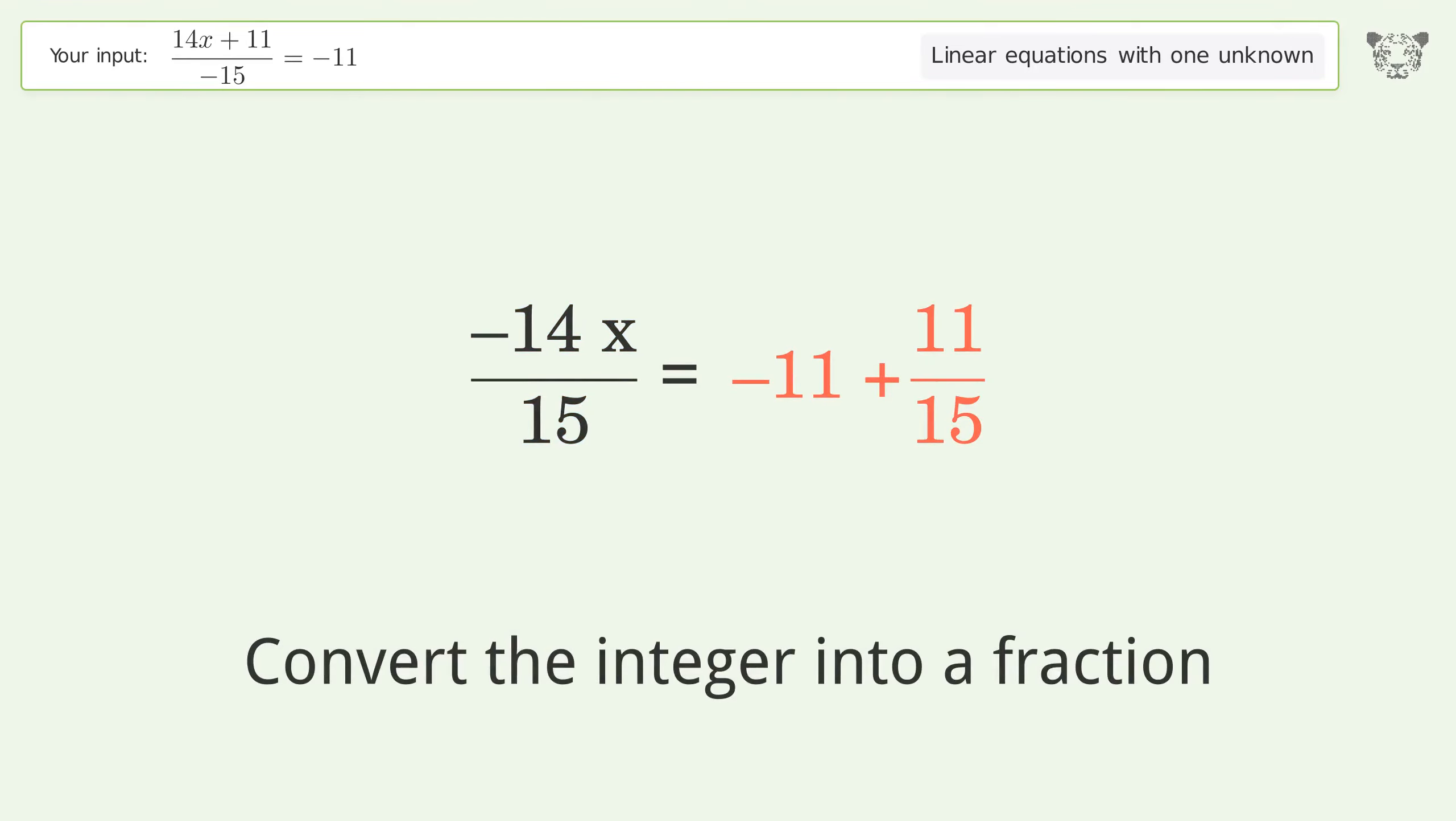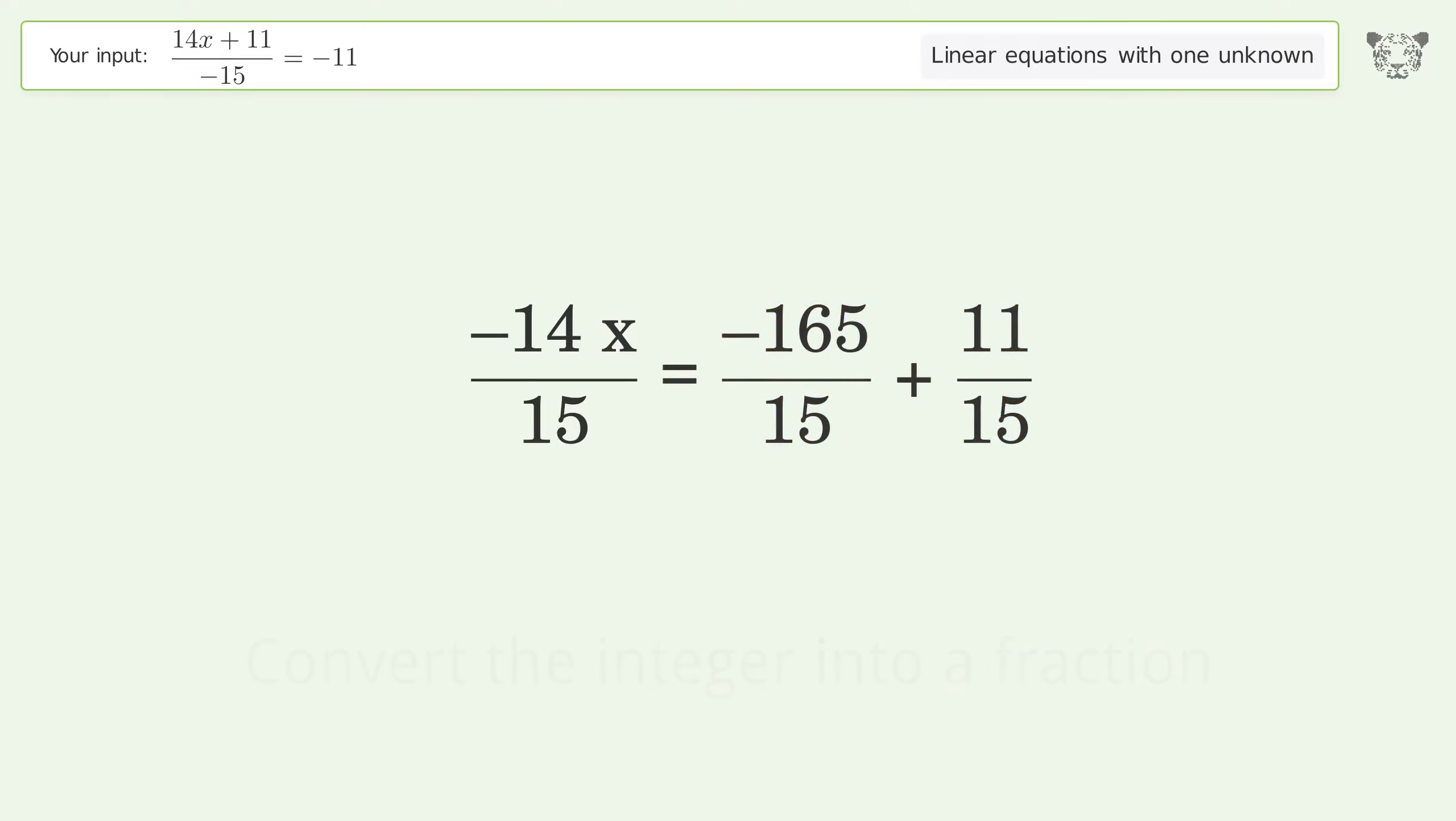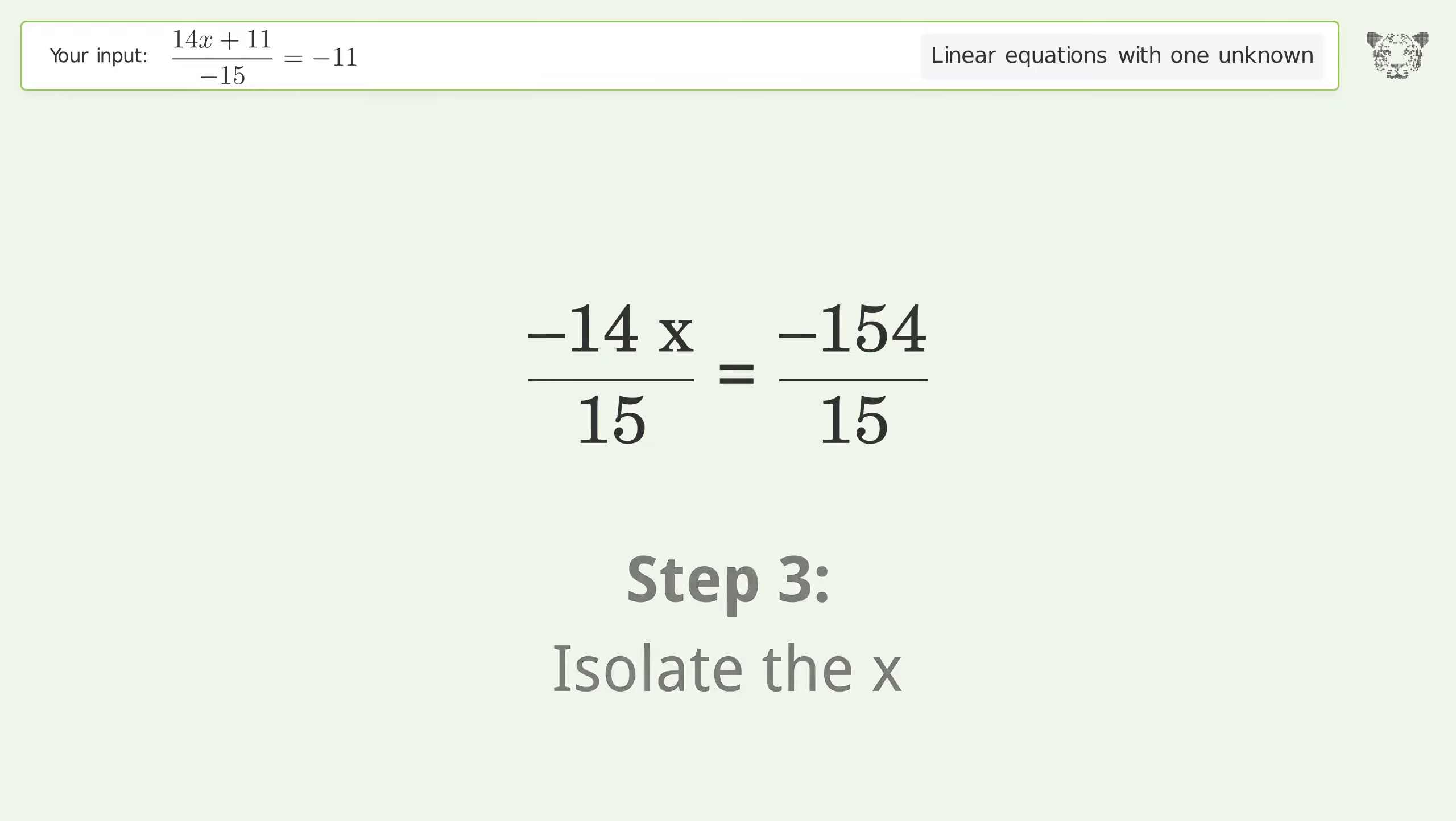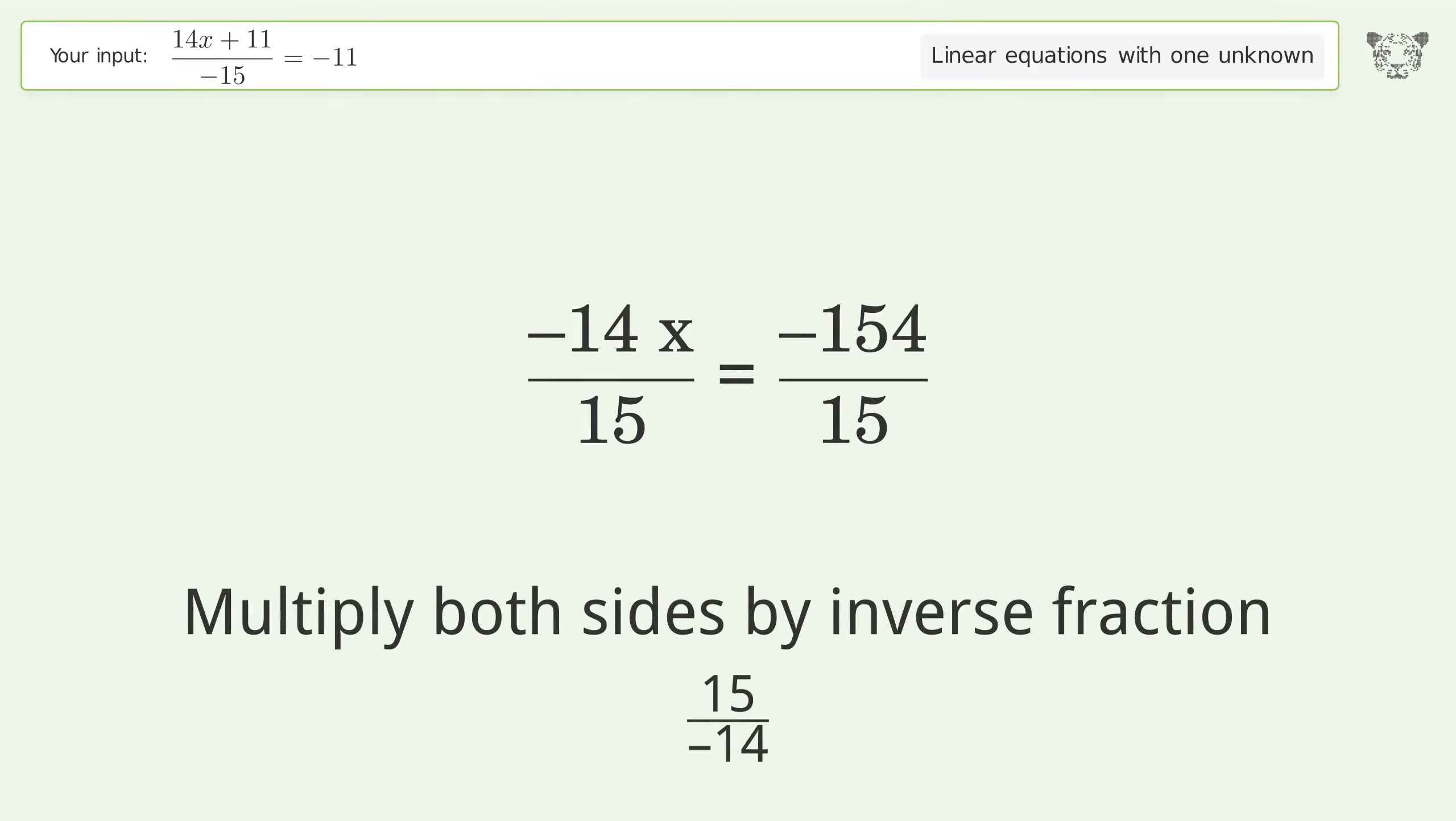Convert the integer into a fraction. Combine the fractions. Combine the numerators. Isolate the x. Multiply both sides by the inverse fraction 15 over negative 14.